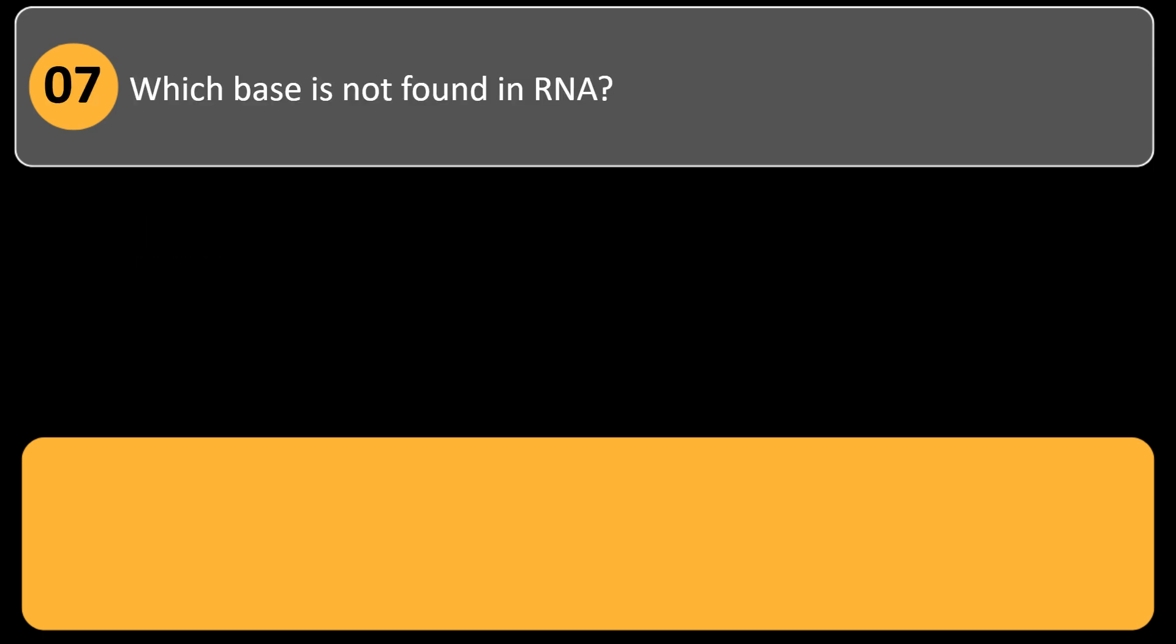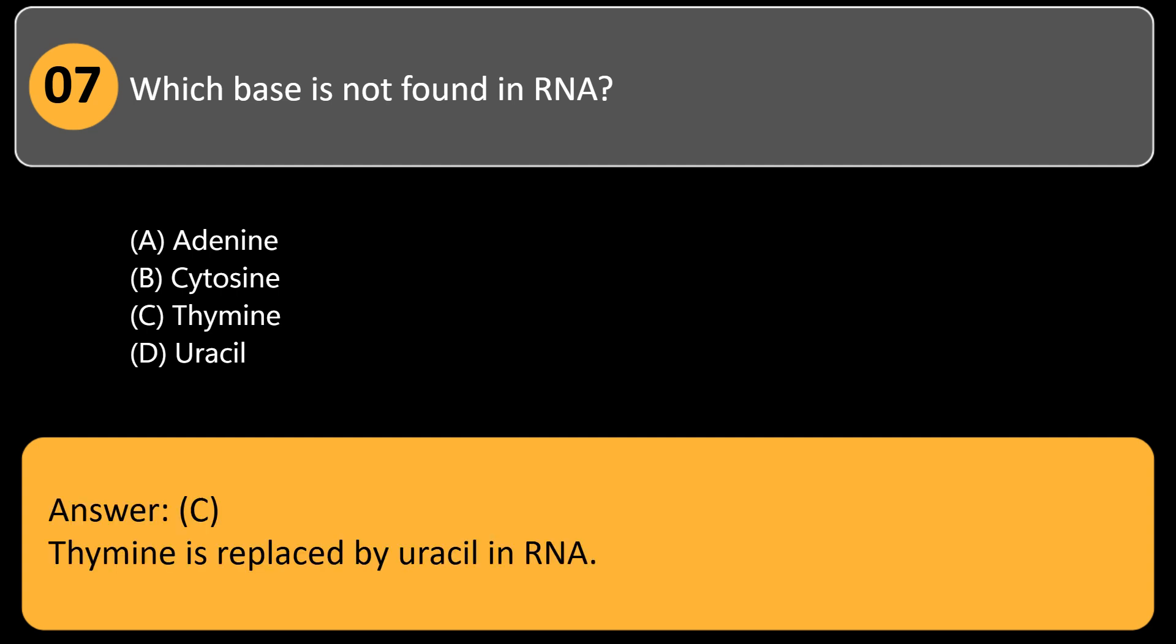Which base is not found in RNA? A. Adenine, B. Cytosine, C. Thymine, D. Uracil. Answer: C. Thymine is replaced by uracil in RNA.